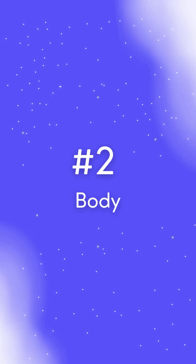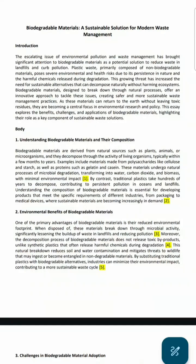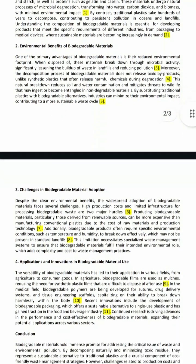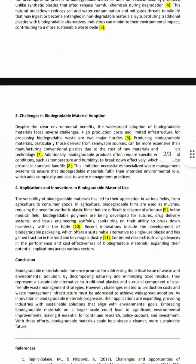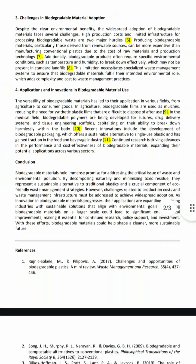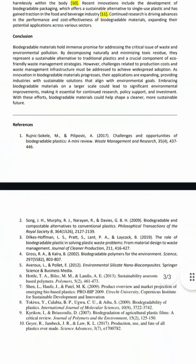Next comes the body of your academic essay, and here you can have multiple paragraphs with each paragraph having one main idea. For each paragraph, you should cite the relevant research papers that you have read to give proof and evidence for your work. This is what is going to make your academic essay more credible.